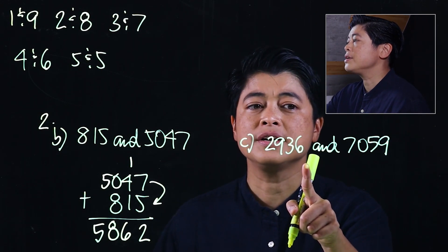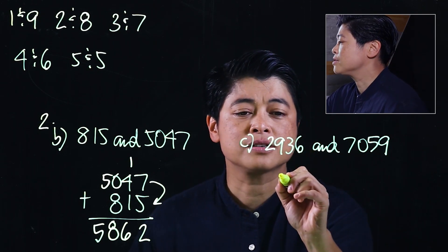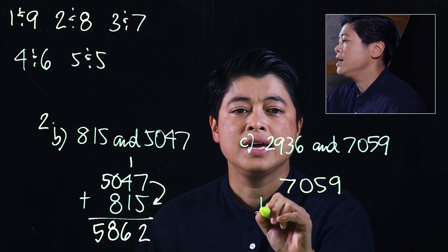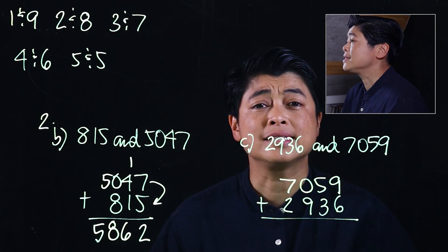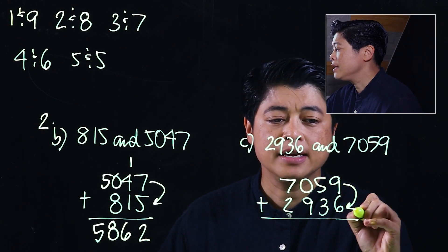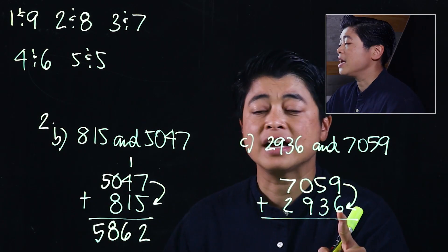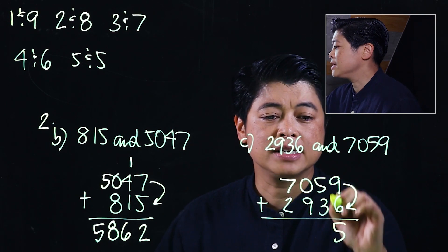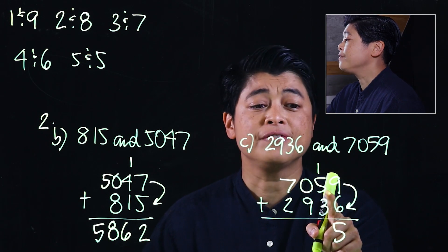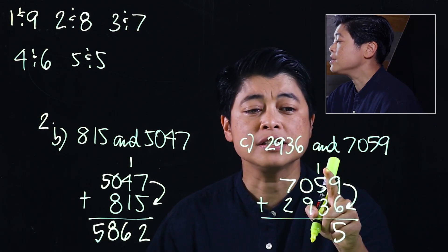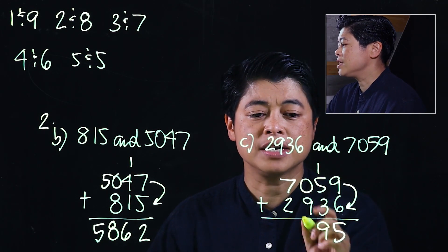Moving to problem c, it says find the sum of 2936 and 7059. We start with 7059 and add 2936 for consistency. We start with 9, and we know we need 1 to get to 10, so we have an extra 5, which makes this 15. Start with the bigger digit 5, add 3 makes it 8, plus 1 carried makes it 9.